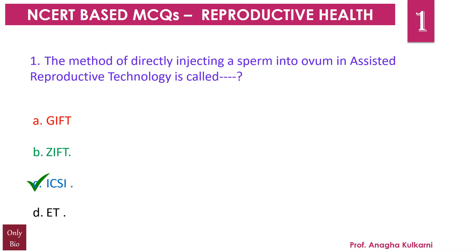ICSI is intracytoplasmic sperm injection. It is one of the techniques of assisted reproductive technology that helps couples overcome infertility. In ICSI, the sperm is directly injected into the ovum in vitro to form the zygote, and then the embryo formed is later implanted through ZIFT — zygote intrafallopian transfer — into the woman.